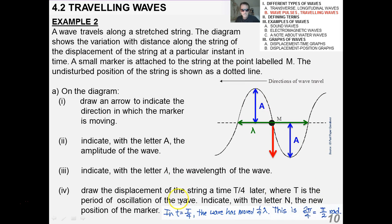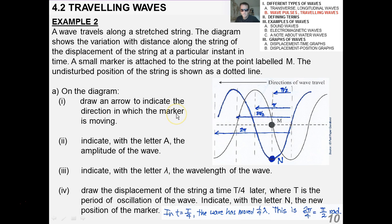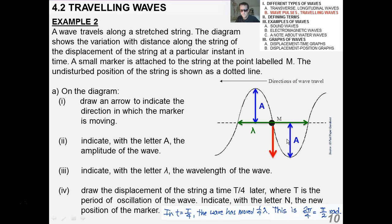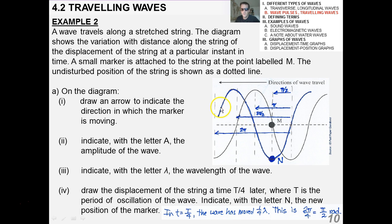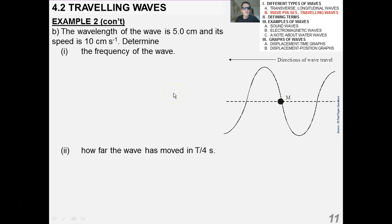Draw the displacement of the string at time T over 4 later, where T is the period of oscillation. In T over 4, the wave has moved one-fourth of a wavelength. And this is pi over 2 radians. And did I indicate it with the letter? Yes, the letter N right here. So, there you go. So, compare this to the previous picture. So, it moves over just a little bit. It moves over one-quarter of a wavelength.